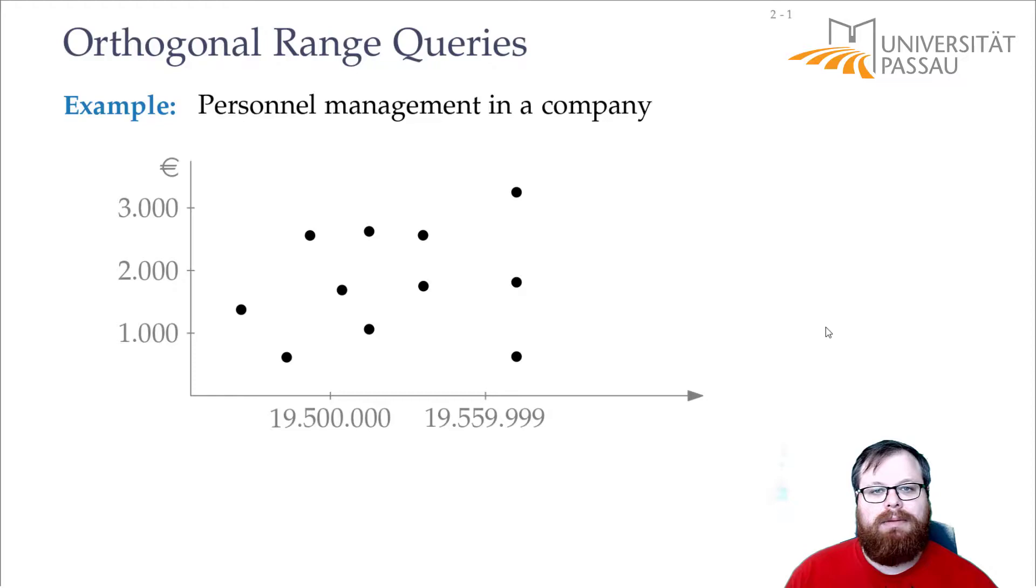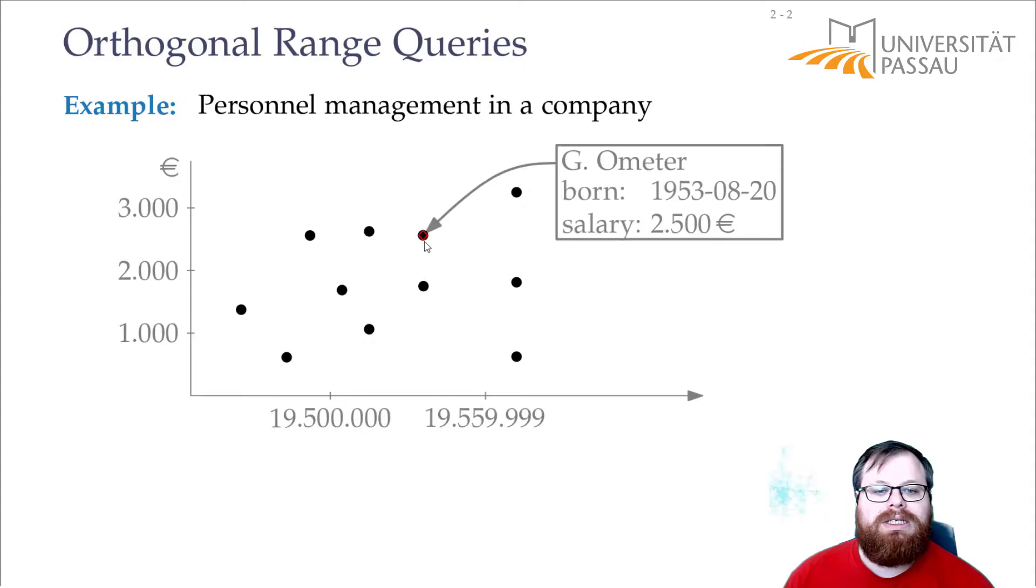So you have two properties, so that means we can model it in geometry in two dimensions and every point here is a database entry. For example, this point here could be Mr. Geometer who was born in 1953 and earns a salary of 2500 euros.